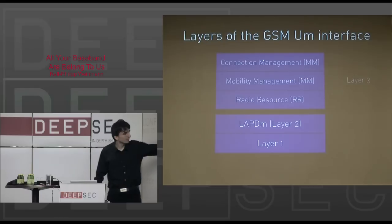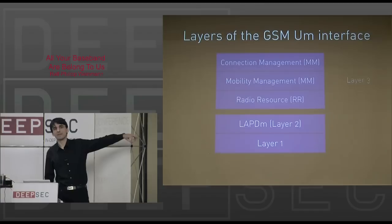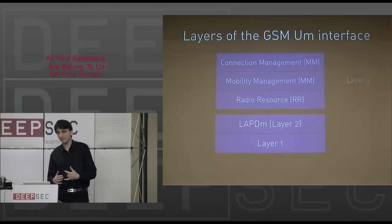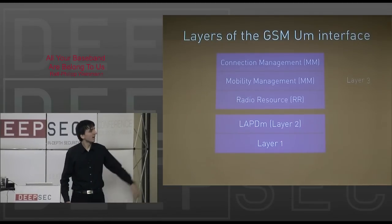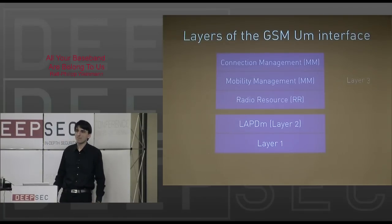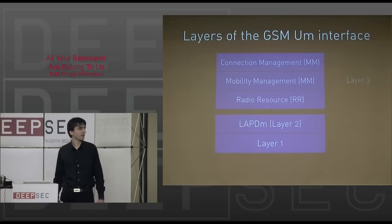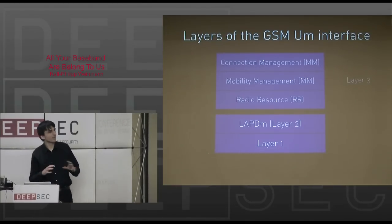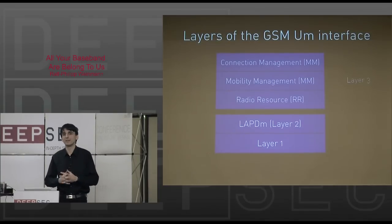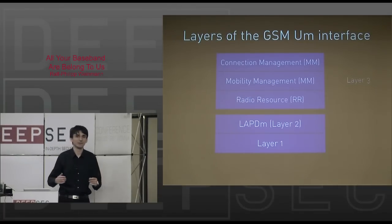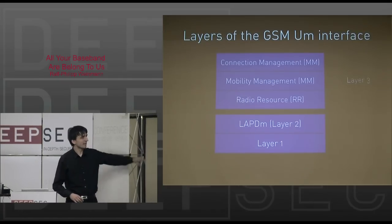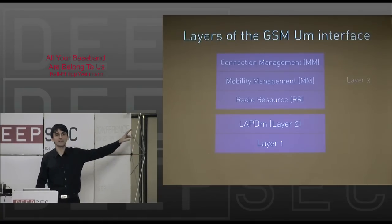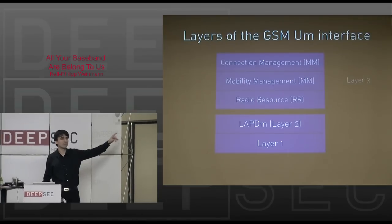It's not the standard OSI model — it's somewhat different. In layer 1 you have the physical layer, which is basically how things are transmitted over the air; this is usually done by DSP in the smartphone. Then you have layer 2, which is basically derived from the ISDN LAPD protocol — in this case it's the LAPDm mobile protocol, with a couple of additions and some things removed. Layer 3 is what we will concern ourselves mostly with because this is where the interesting stuff happens. It can be subdivided into three other layers: radio resource, mobility management, and connection management.